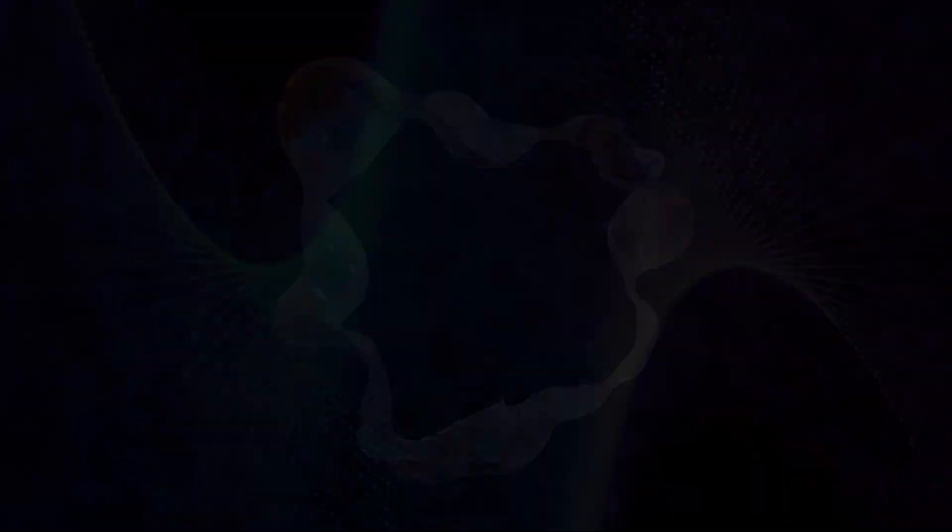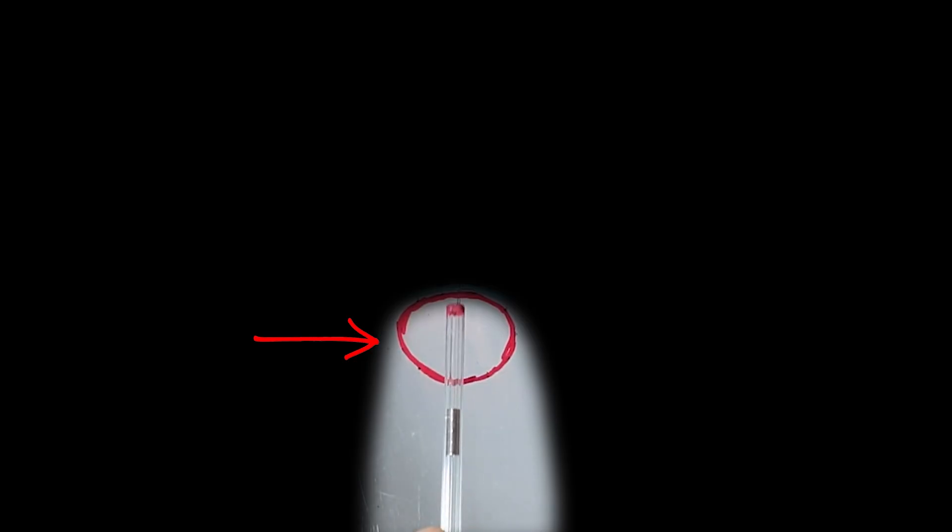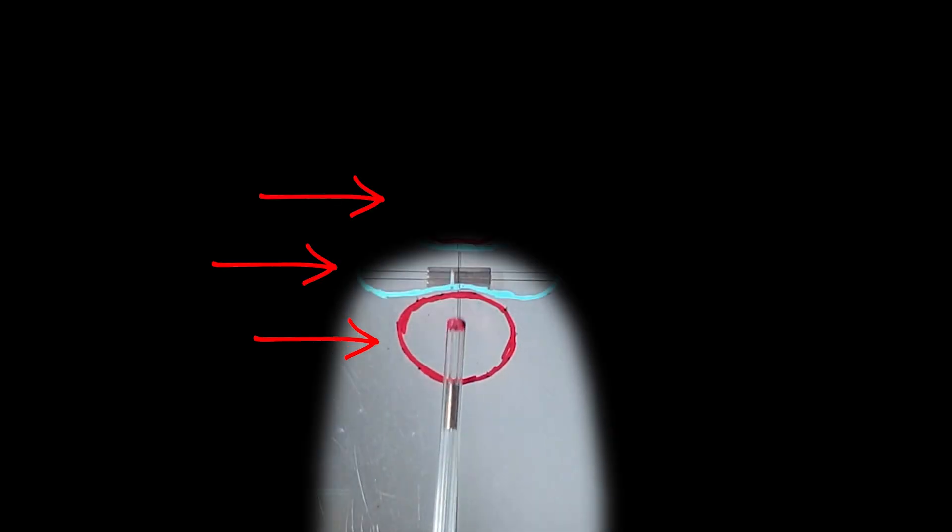In macroscopic terms, the measurement angle reveals one of the possible structures, and knowing one part lets you know the other, just like in quantum experiments.